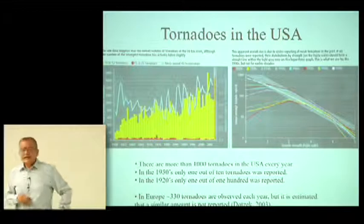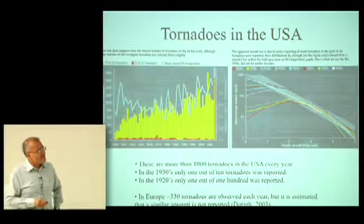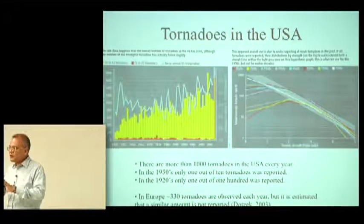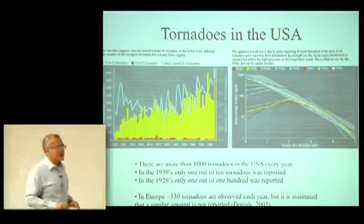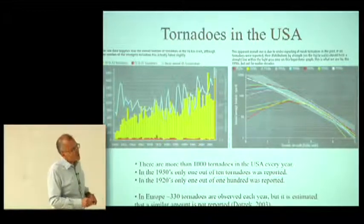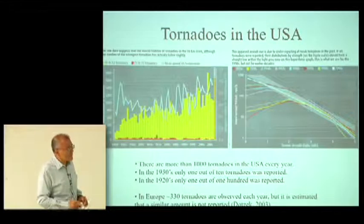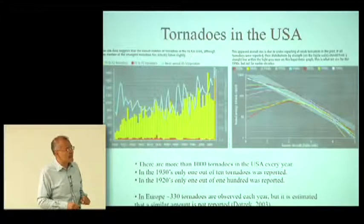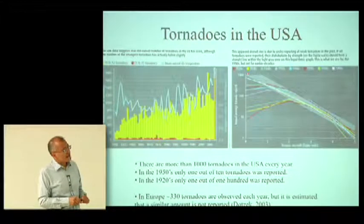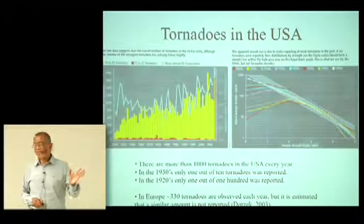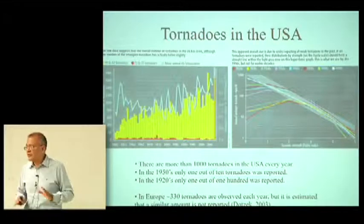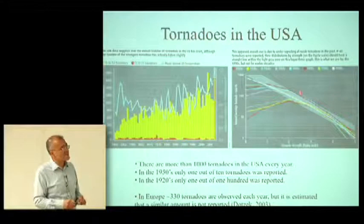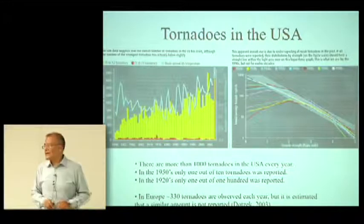Another important thing to learn from this graph: if you knew all your tornadoes and plotted the number on a logarithmic graph, they would fall along a straight line theoretically. That is almost what happens for tornadoes in the 1990s.